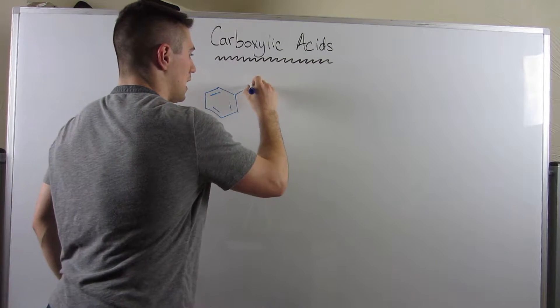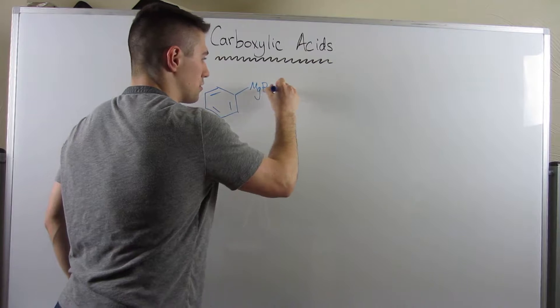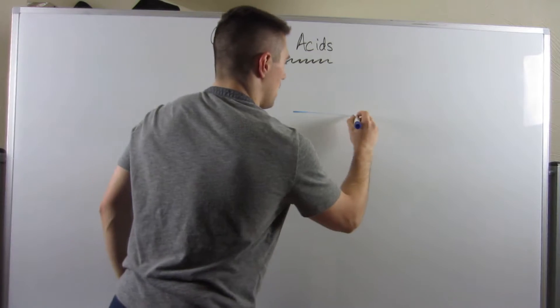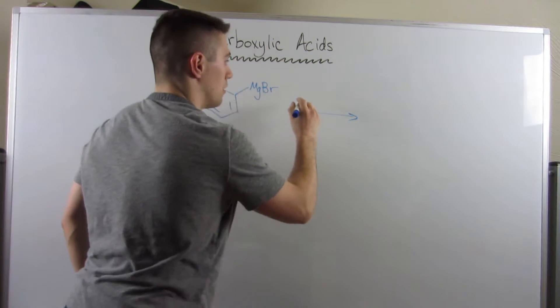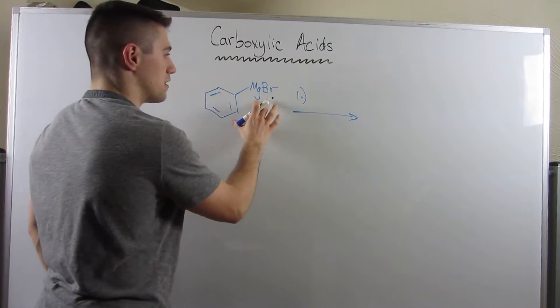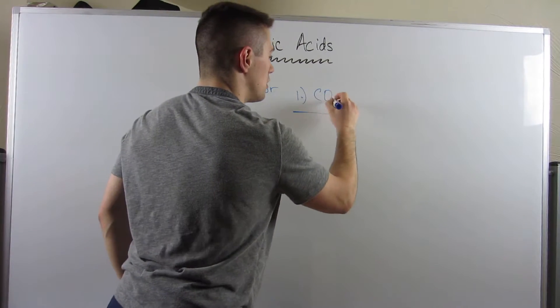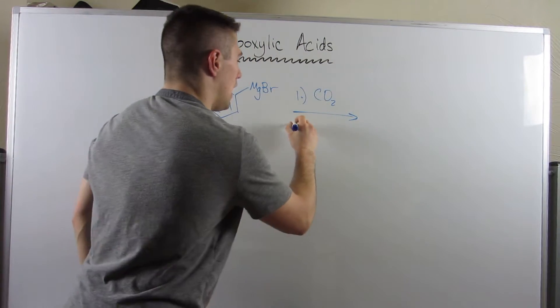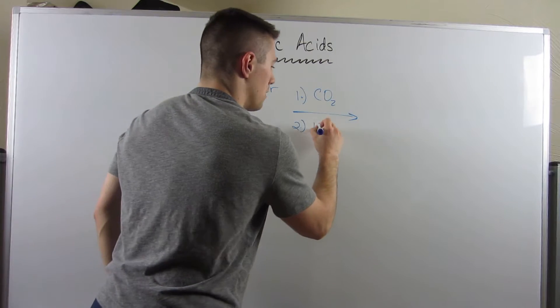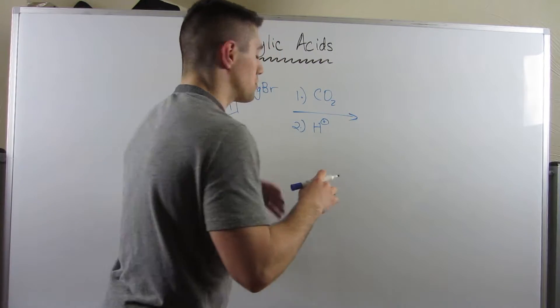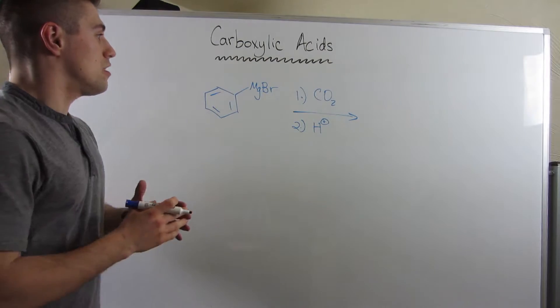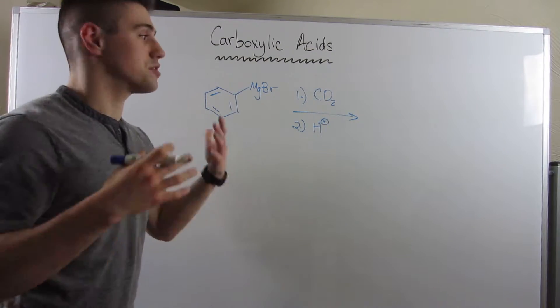If I give you this Grignard reagent, we're going to take this Grignard reagent and introduce it to CO2, and then a cleanup step of H+ or H3O+, whatever you're feeling in the moment. This reaction is going to produce the following product.